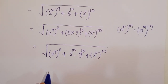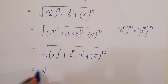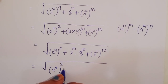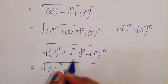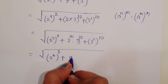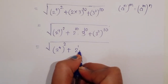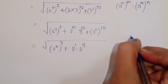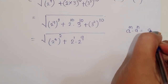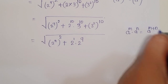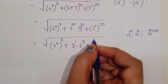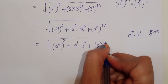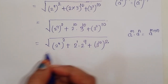In the next step, we write 2 power 10 in the form of 2 power 1 times 2 power 9, using the formula a power m into a power n equals a power m plus n, plus 3 power 10. Then we take power 10 inside and power 2 outside.